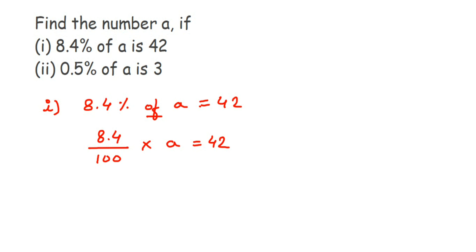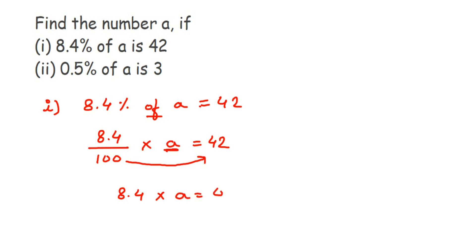We have our equation and we need to find the variable 'a'. We'll do cancellation to reduce it. I want only 'a' on the left-hand side, so I need to remove 8.4 and 100 from the left. I'll transpose them. Since 100 is in division, when transposed to the other side it goes to multiplication. So we get: 8.4 × a = 42 × 100.